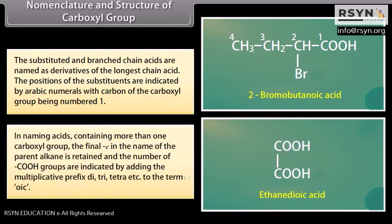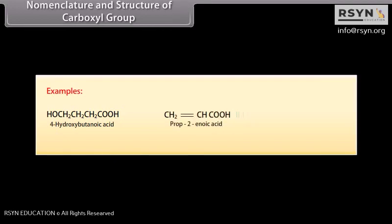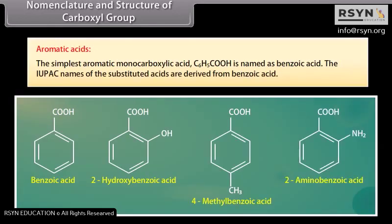In naming acids containing more than one carboxyl group, the final -e in the name of the parent alkane is retained and the number of carboxyl groups is indicated by adding the multiplicative prefixes di-, tri-, tetra-, etc. to the term -oic. The simplest aromatic monocarboxylic acid, C6H5COOH, is named as benzoic acid, and the IUPAC names of substituted aromatic acids are derived from benzoic acid.